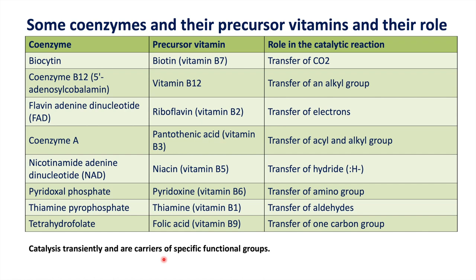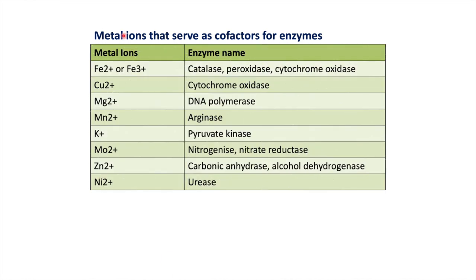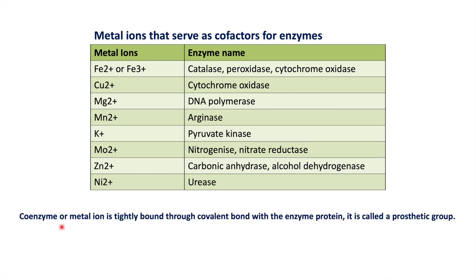Examples of metal ions acting as cofactors: Iron is a cofactor in catalase, copper in cytochrome oxidase, magnesium in DNA polymerase, manganese in arginase, potassium in pyruvate kinase, molybdenum in nitrogenase and nitrate reductase, zinc in carbonic anhydrase, and nickel in urease.